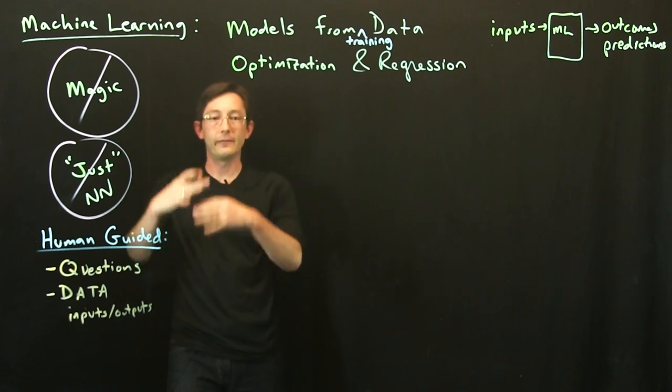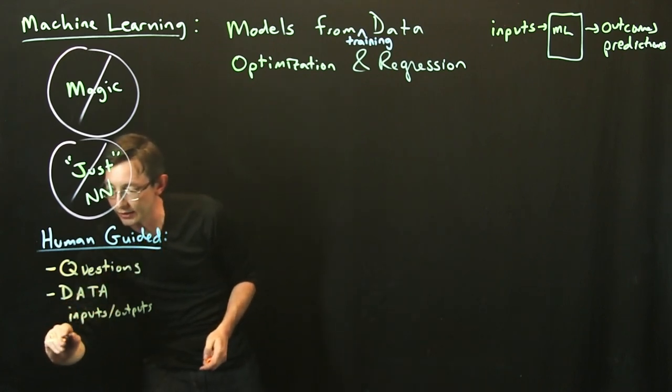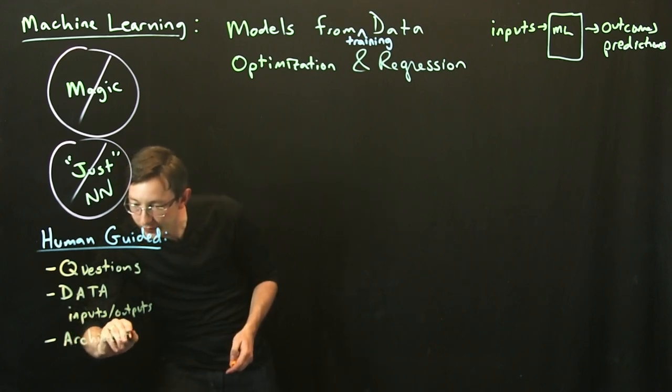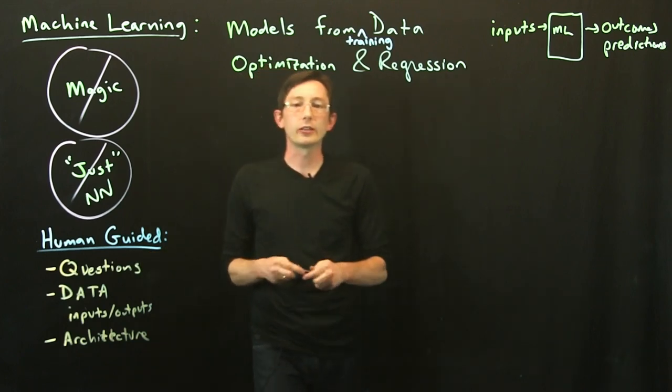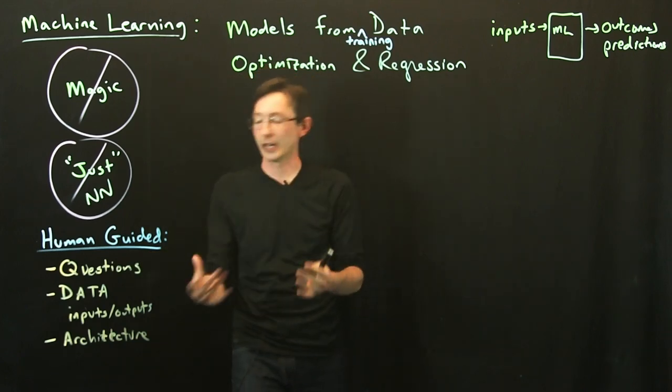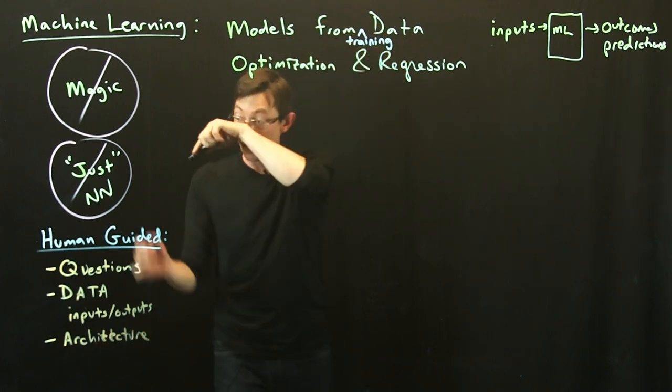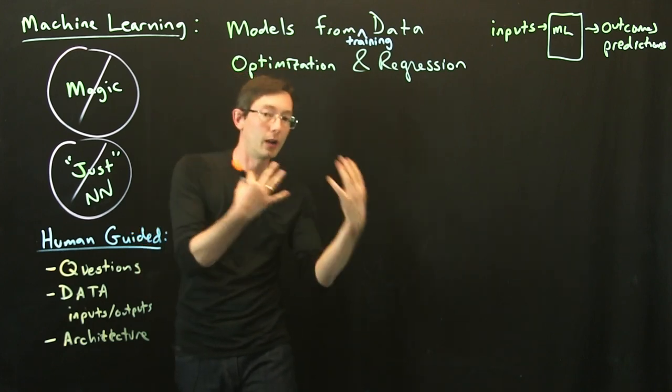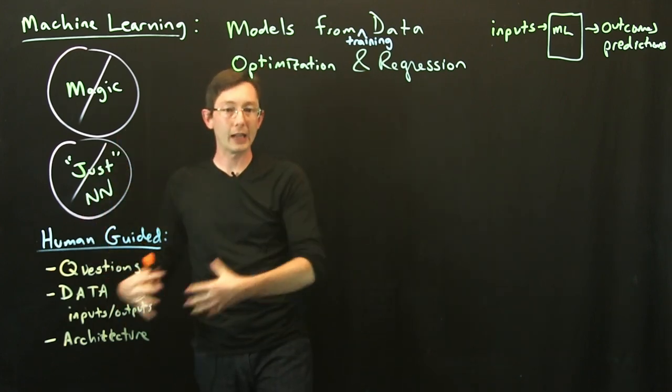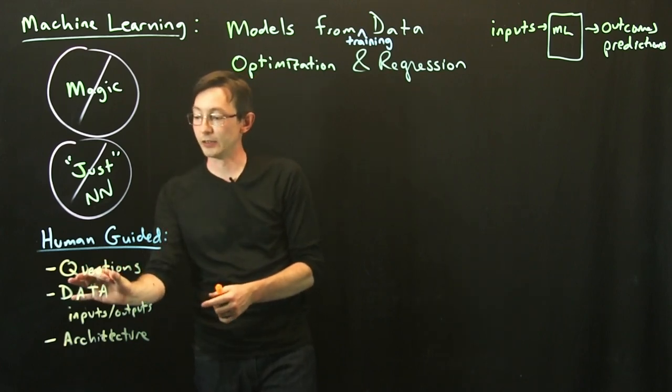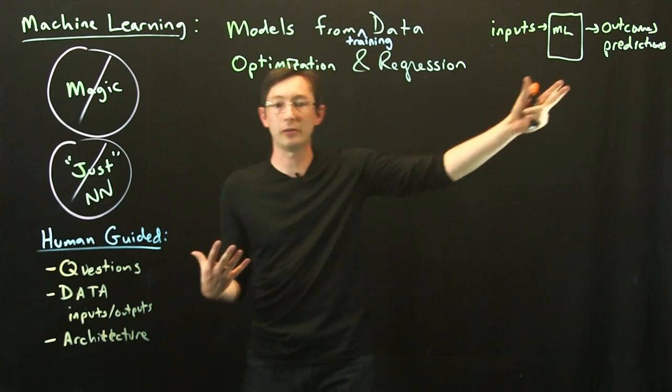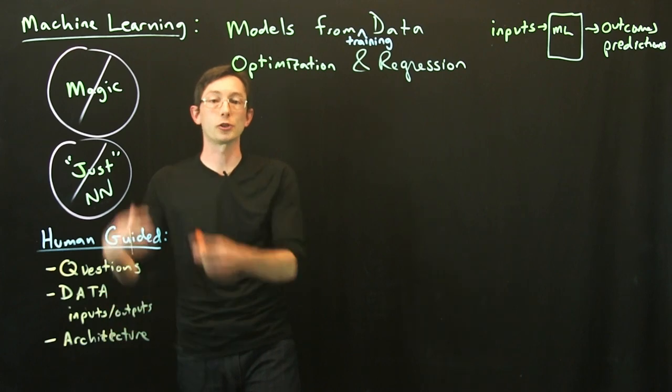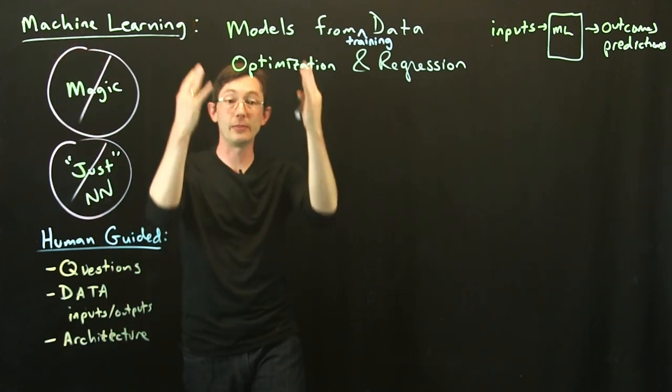And then a last very important ingredient is choosing the architecture. Which architecture, which machine learning technique, which framework, which architecture are we going to use to learn models from data? Am I going to pick a neural network, a deep neural network, which one? Am I going to use a support vector machine or a decision tree? That's where the human guided expertise really comes in. They get to decide what questions they want to answer, what process they want to model, what's the data, the inputs and the outputs. And importantly, they get to choose the architecture, what type of machine learning framework do they use to build these models from data?